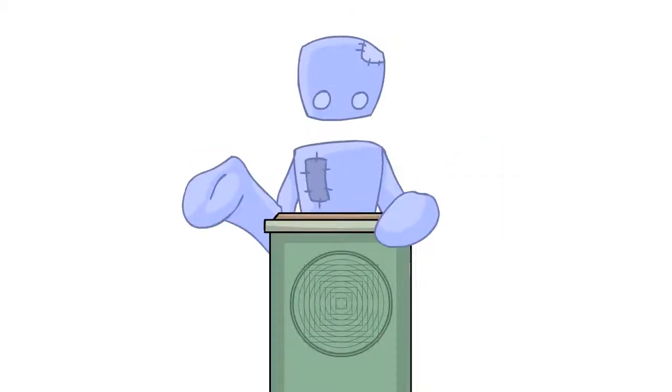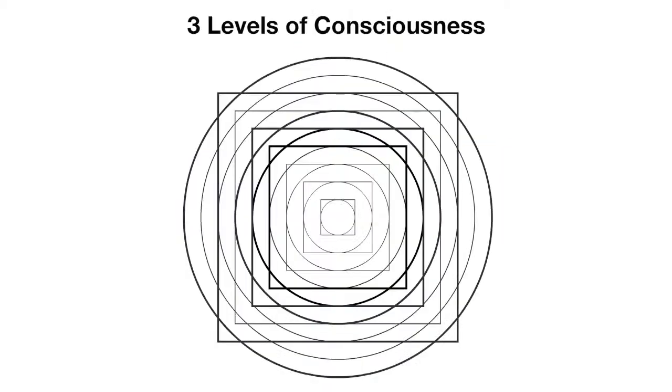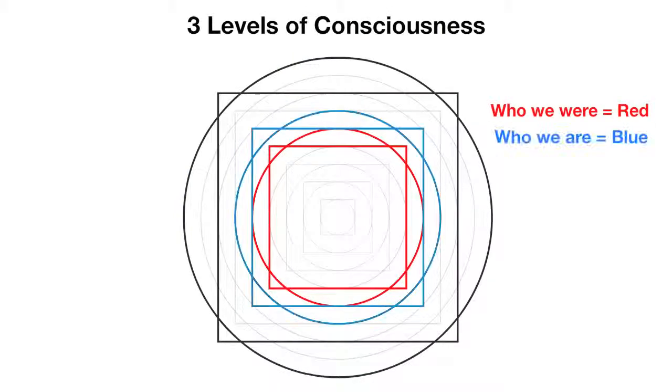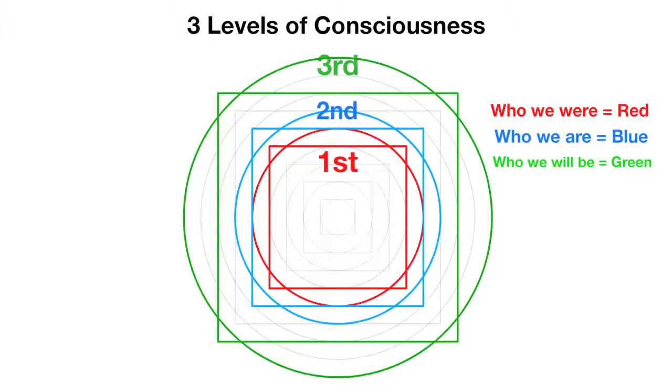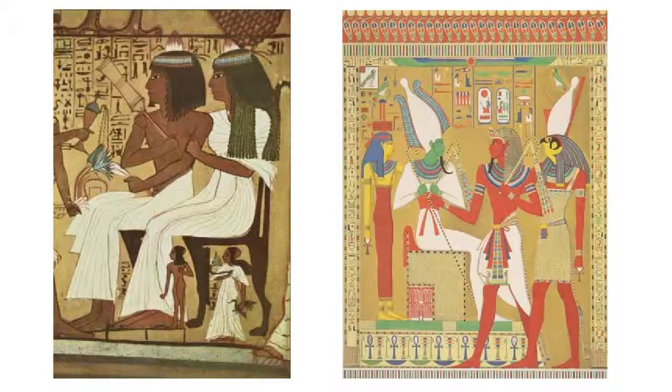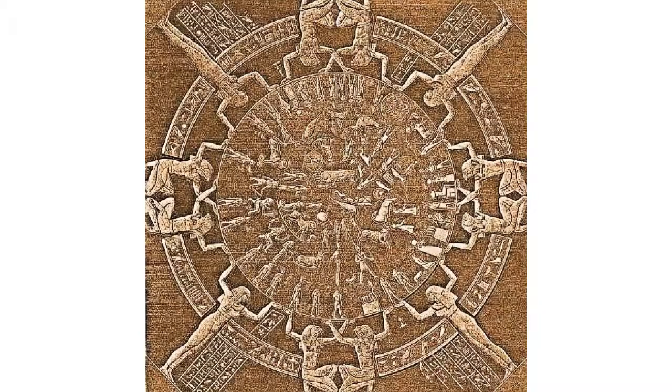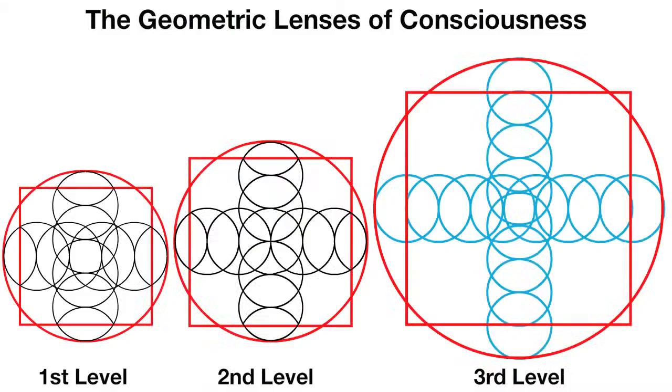Right now, there are three primary levels of consciousness that we are going to be talking about. They are essentially who we were, who we are, and who we will be. We'll call it the first, second, and third. The ancient Egyptians were very concerned with these three levels as well, and much of their culture was based on this information. Each of these levels has their own geometric lens too.